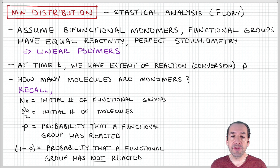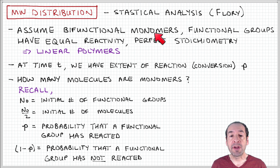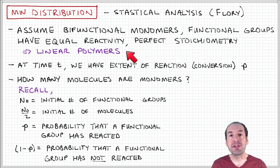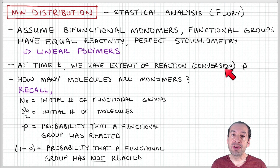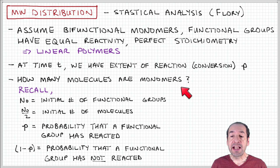Just to review as a starting point, we're talking about a straightforward case where we have bifunctional monomers, equal reactivity of functional groups, and perfect stoichiometry. This is a recipe, as we said earlier, to create linear polymers. Also, remember that at time t, we've defined this extent of reaction parameter, which we can also think of as a conversion in chemical engineering terms. And we can ask questions about the population of molecules that are in our sample.